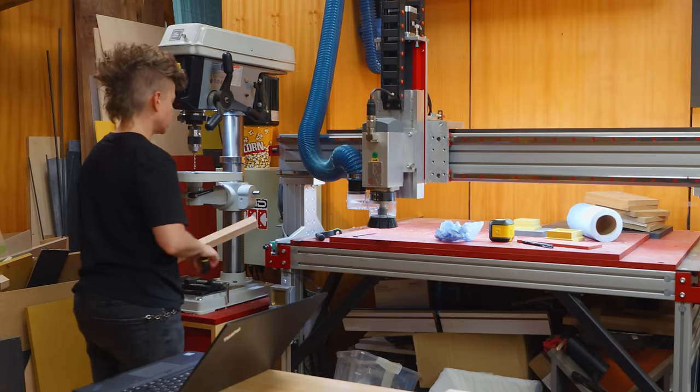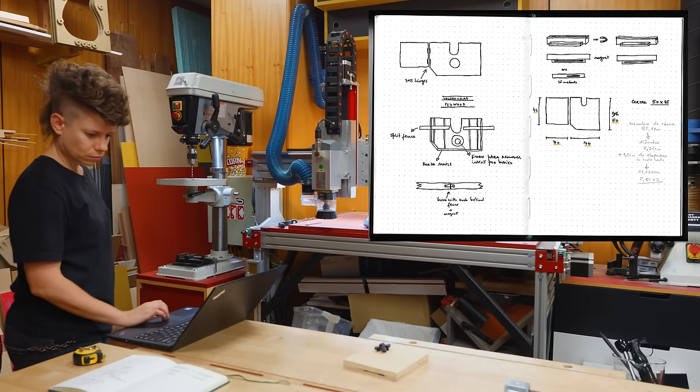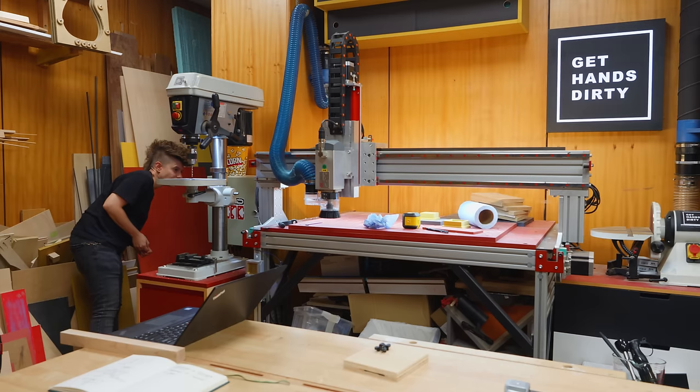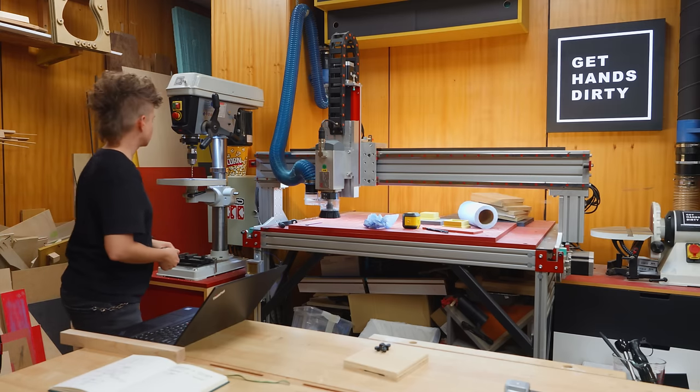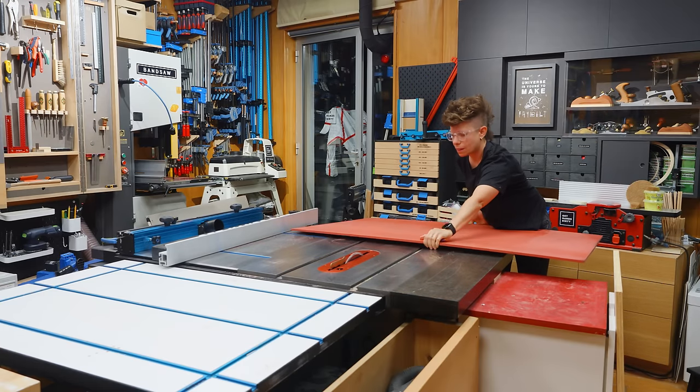After checking the CNC movements around the drill press, I took measurements to ensure that my table would fit within the available space. You can see that I don't have much space around it, but I was sure I could still build something really cool.